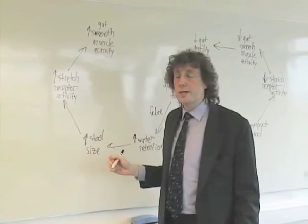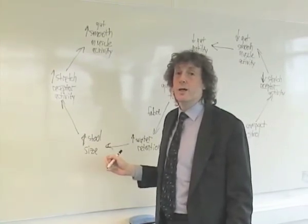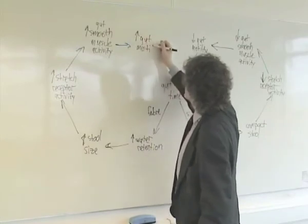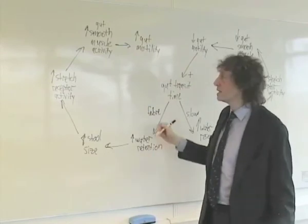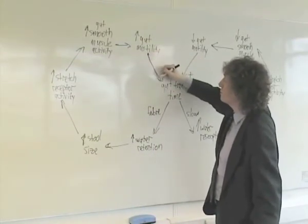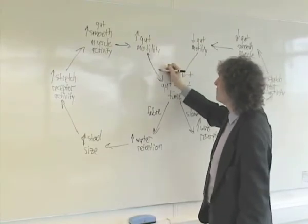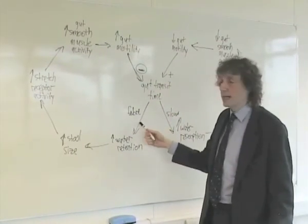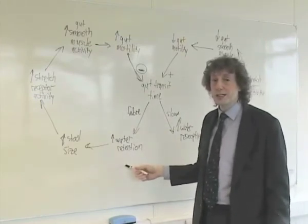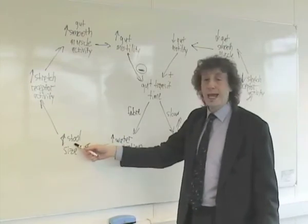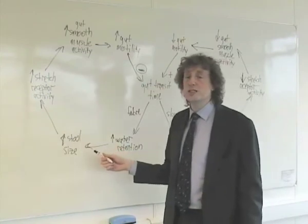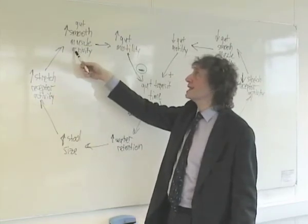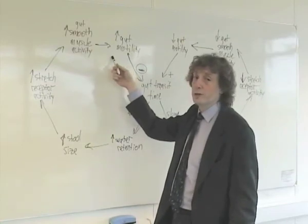There will be an increase in smooth muscle activity in the gut. This increase in smooth muscle activity will ultimately lead to a physical effect: an increase in gut motility. This increase in gut motility is essentially the regularization of our gut transit time problem. So, adding fiber to the diet leads to increased water retention in the gastrointestinal tract, which leads to increased stool size, which triggers an increase in stretch receptor activity, followed by an increase in gut-smooth muscle activity, and ultimately regularized motility.